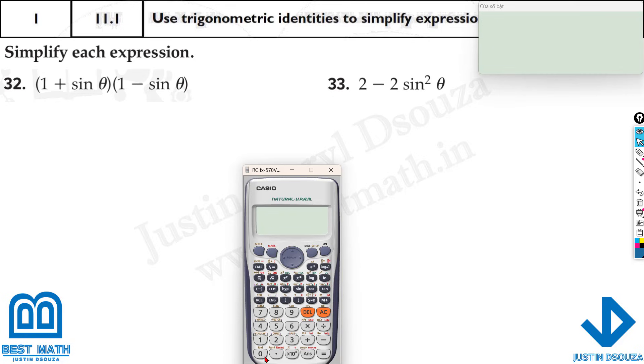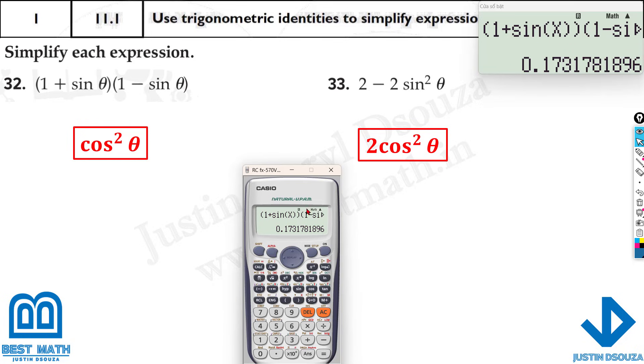What about this one here? It is 1 plus sine theta. So it's only sine theta close the bracket twice because it's now the first part is over. Multiplied with 1 minus sine theta and close the bracket. Now calculate this at 2. Here the value is 0.1731. Now you should look into all the four options and start solving them up.